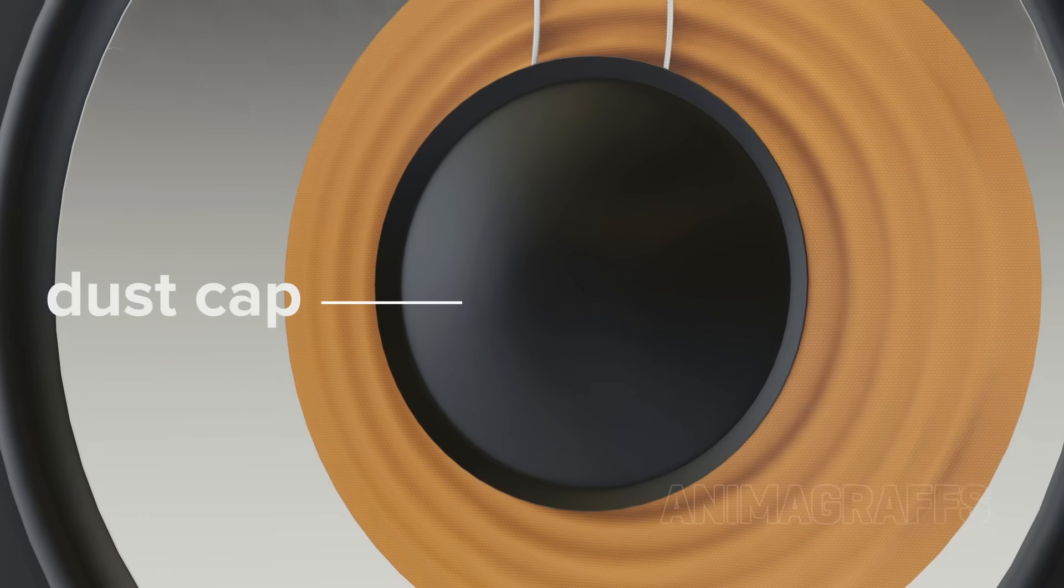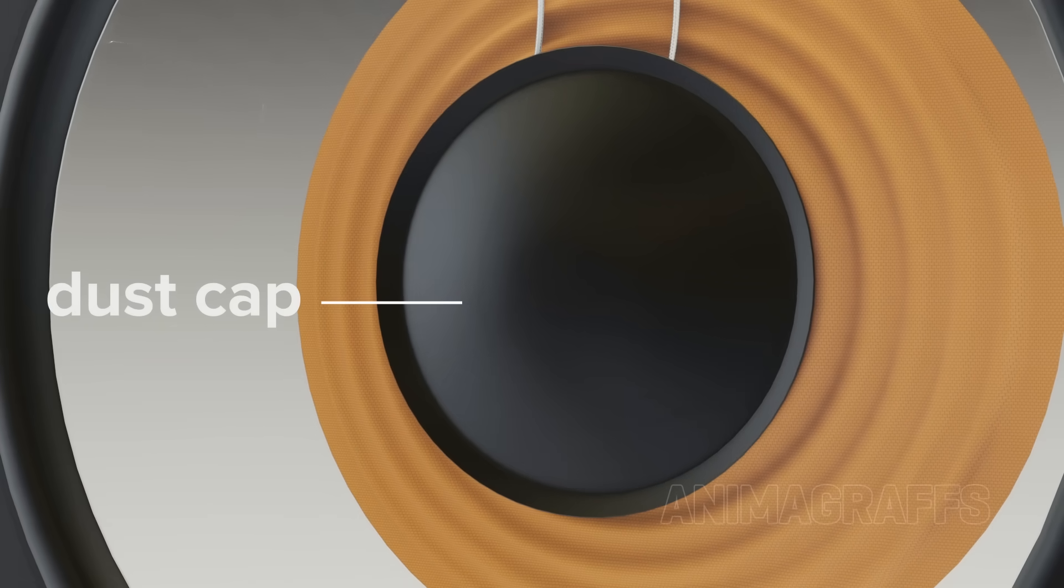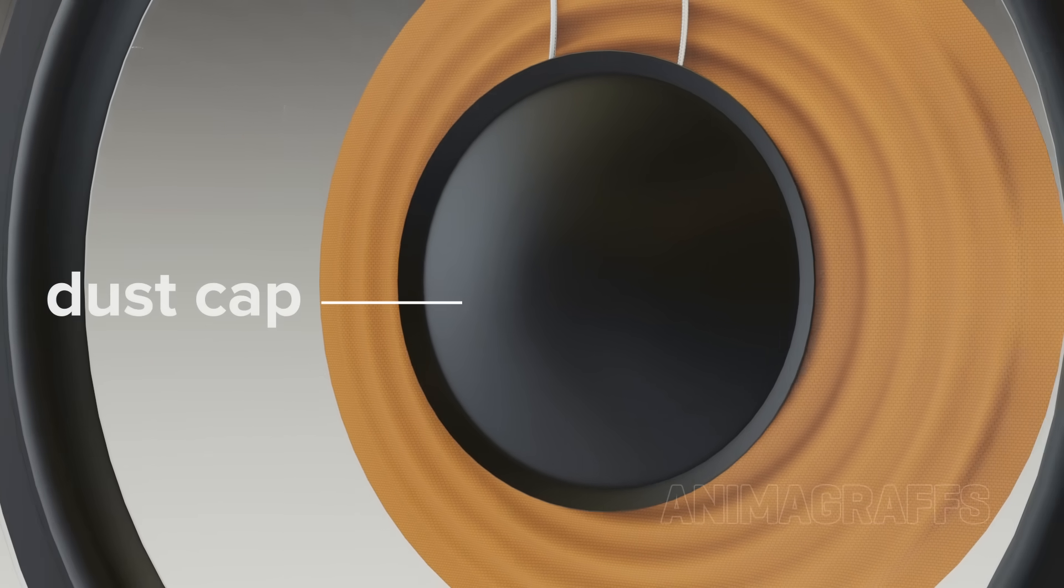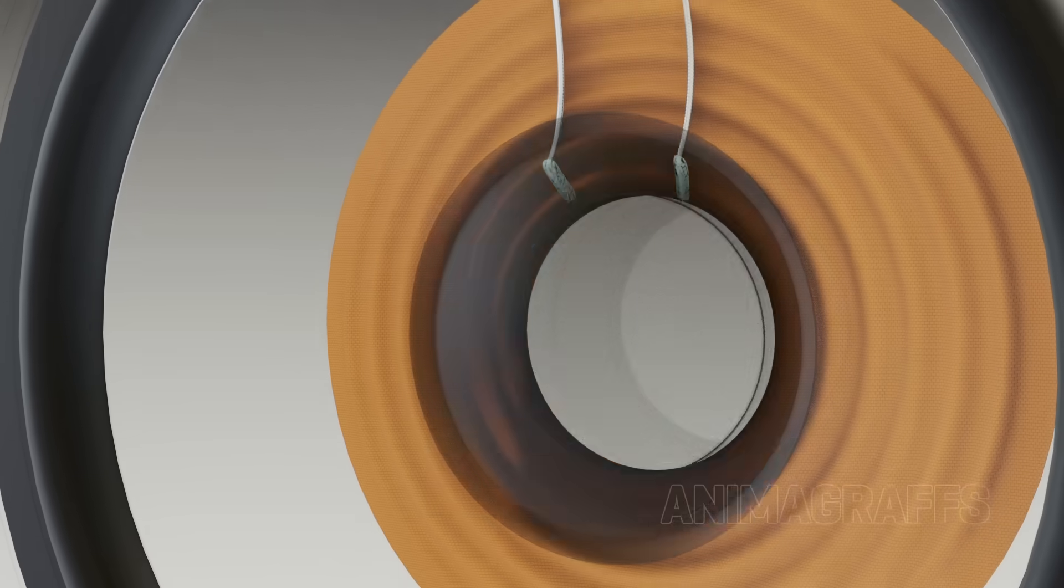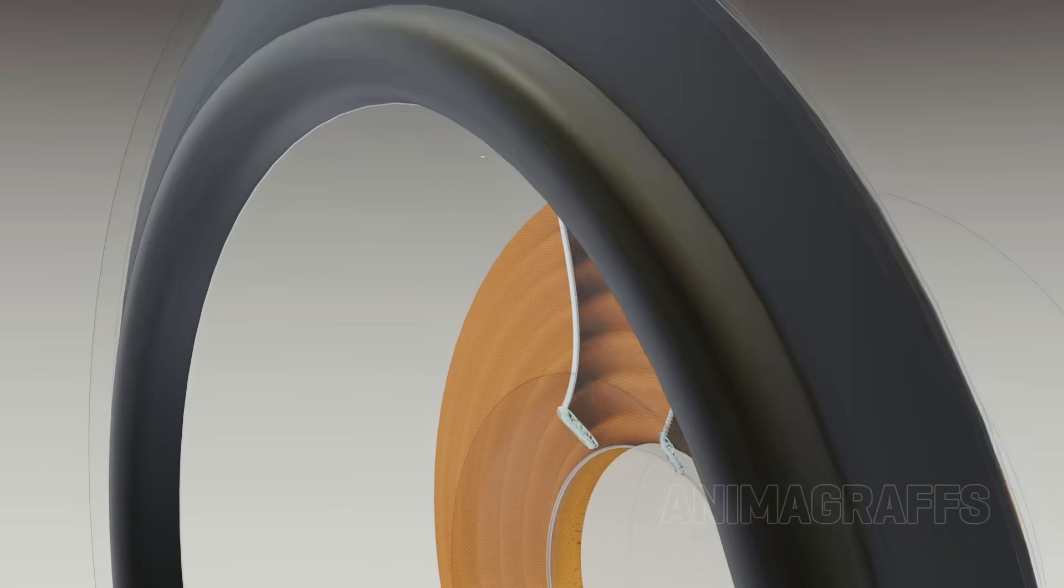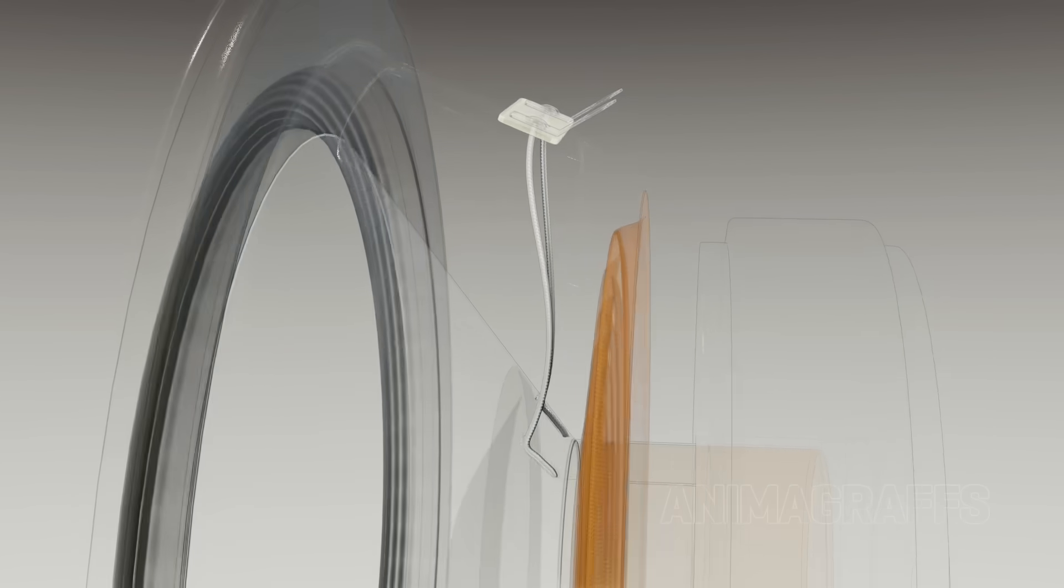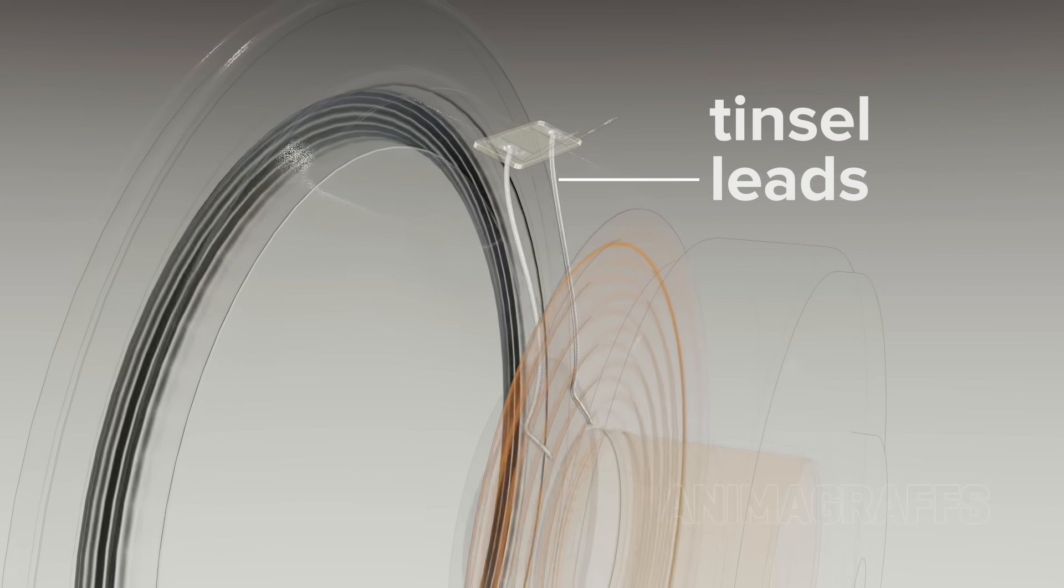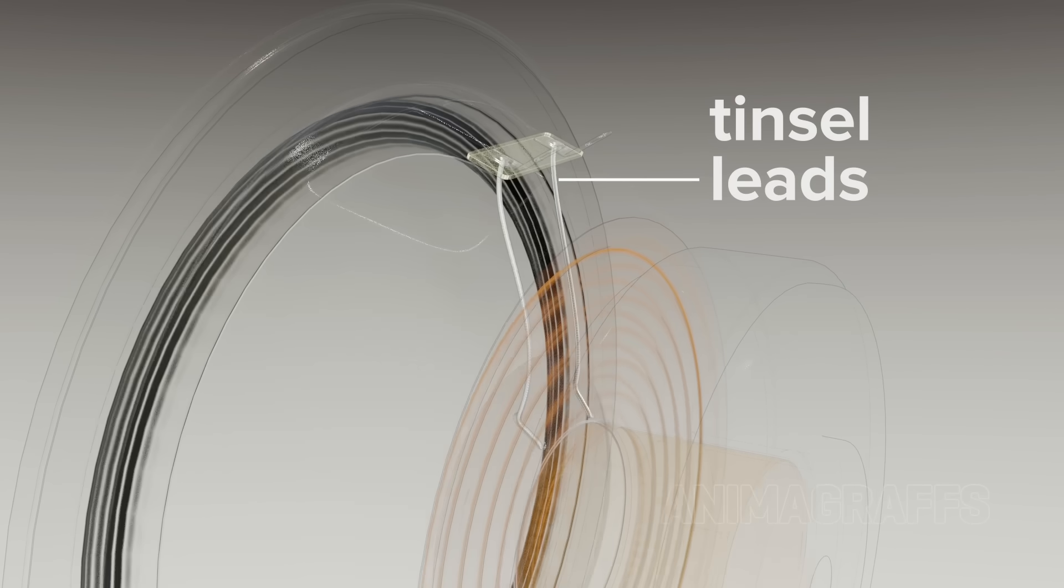The dust cap keeps debris and unwanted material out of sensitive internal areas. Underneath the dust cap, the voice coil's copper leads attach to more flexible wires, called tinsel leads, that can smoothly deform with intense speaker movement.